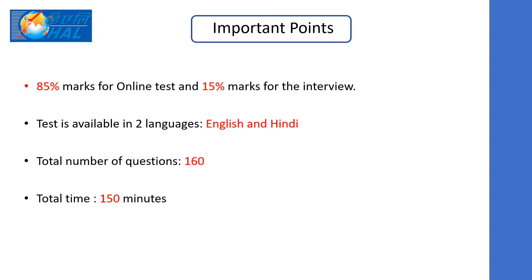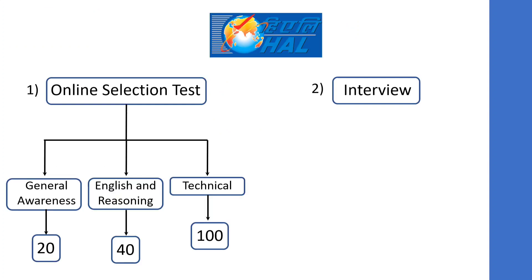You will have 150 minutes to attempt these 160 questions — basically one and a half hours. These 160 questions are divided into three parts: the first part is general awareness, the second part is English and reasoning, and the third part is technical questions. General awareness includes 20 questions, English and reasoning includes 40 questions, and technical includes 100 questions.